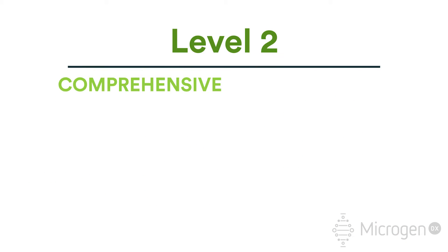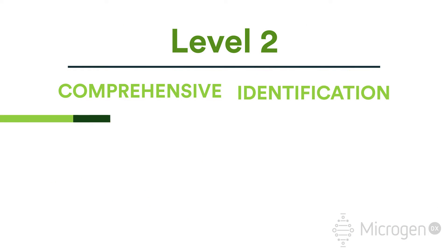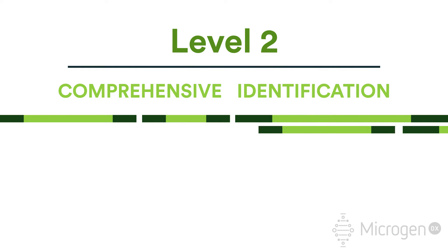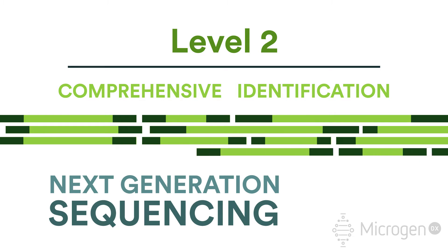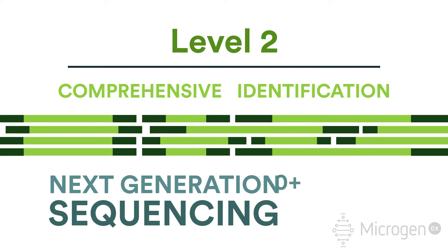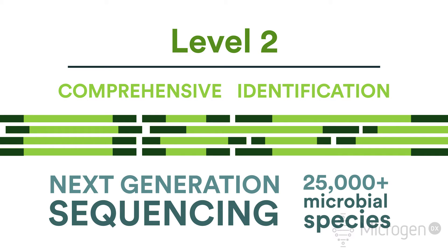Level 2 is the comprehensive identification using next-generation sequencing. By using next-generation sequencing, we're able to sequence over 25,000 microbial species.